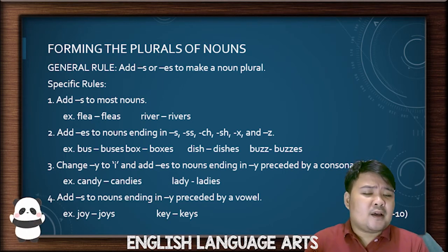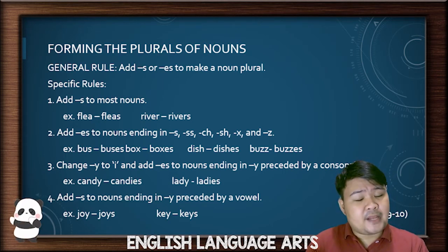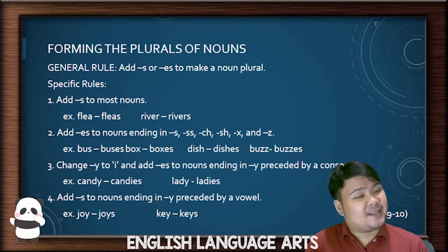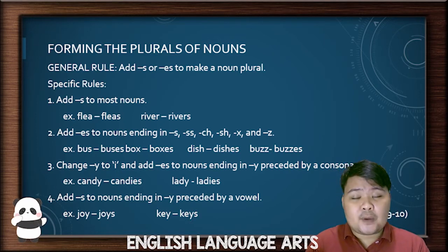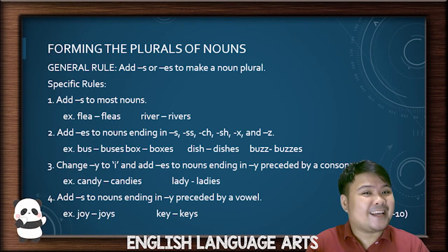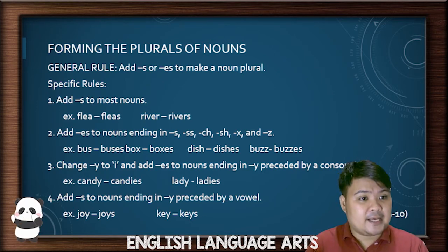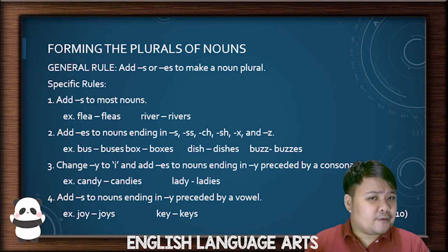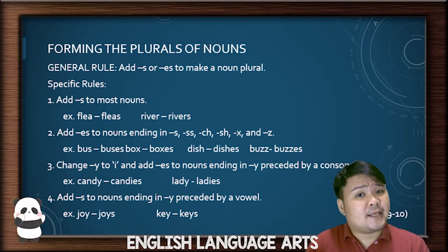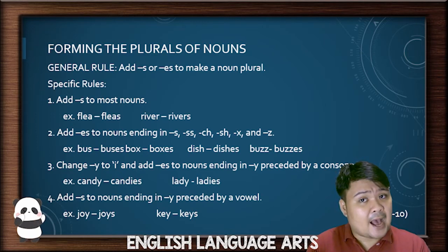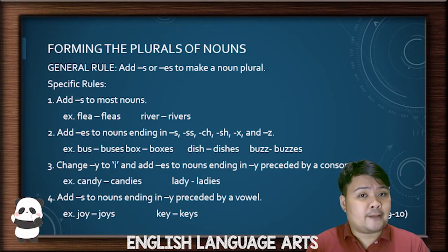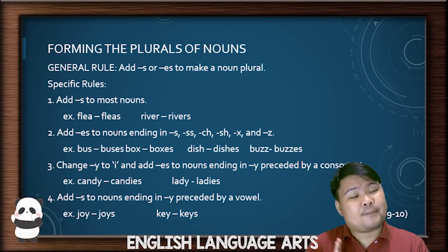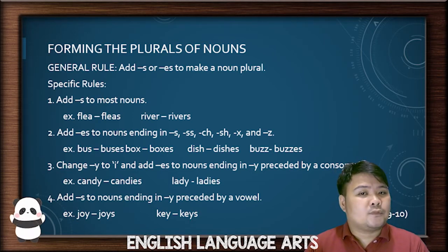For rules 3 and 4, these are words that end in Y. In rule 3, if the letter before the Y is a consonant, change Y to I first and then add ES. For example, candy becomes candies and lady becomes ladies. In rule 4, if the letter before the Y is a vowel — A, E, I, O, U — you add only an S. For example, joy and key just add S.